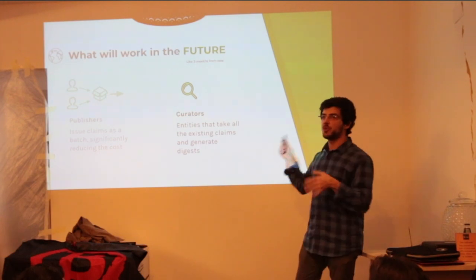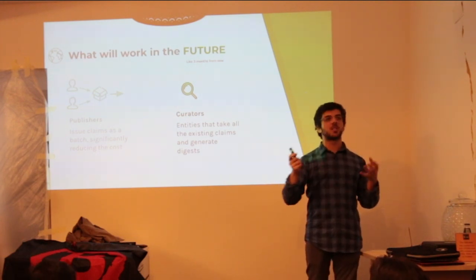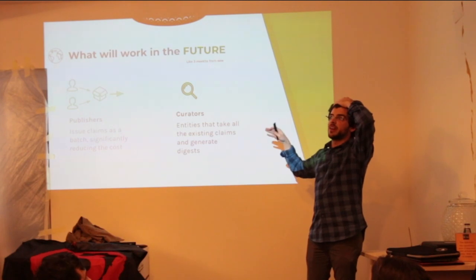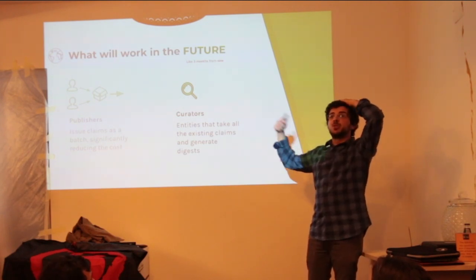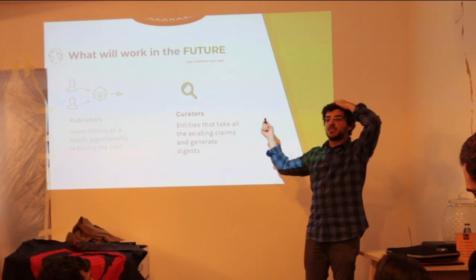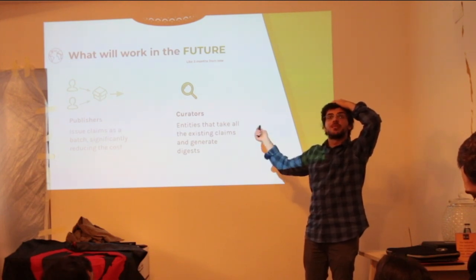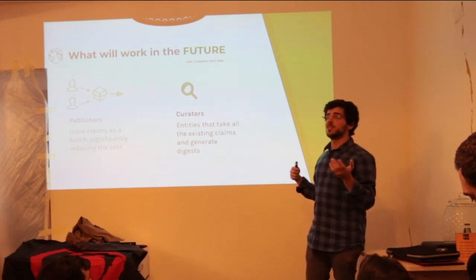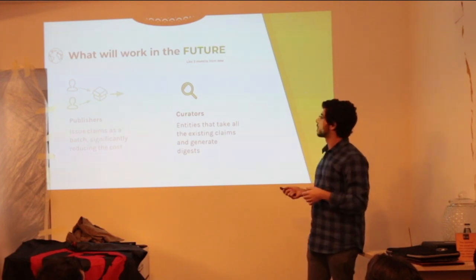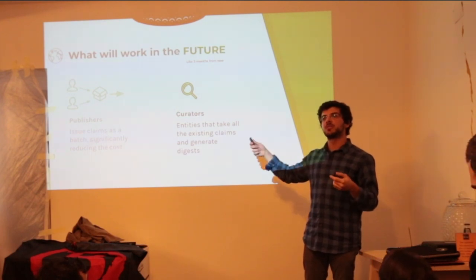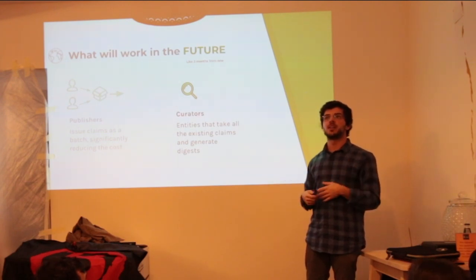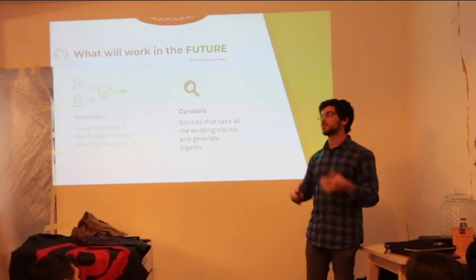We also plan to introduce curators — entities that take existing claims and generate new claims from them. For example, a curator would take all claims about an article, then make a new claim saying '70% classify this as fake news, 20% say it's a good article, and 10% say something else.' You could subscribe to claims made by curators and build a reputation system on top of curators using tokens, so curators with more reputation would have their claims weighted higher.